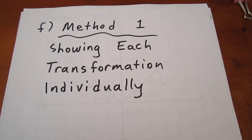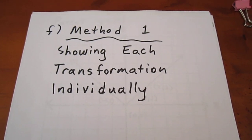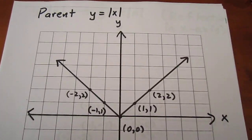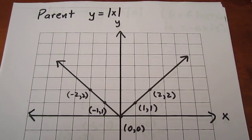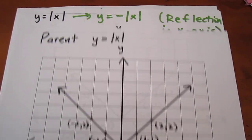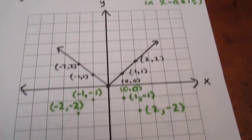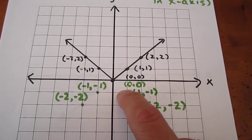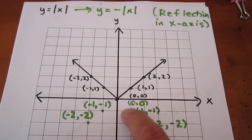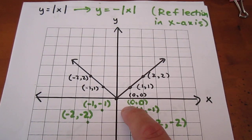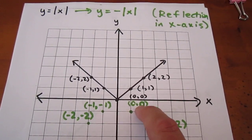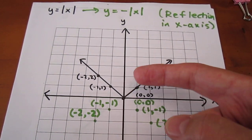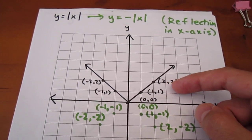To show each transformation individually is the object of Method 1. We begin with our parent function, y equals the absolute value of x, and these are the coordinates. What we then want to do is reflect it in the x-axis. Every one of these points — 0, 0 for instance — will have a y value that's been multiplied by negative 1. So that becomes 0, 0. The point 1, 1 will become 1, negative 1, because that's what happens when you reflect something in the x-axis.